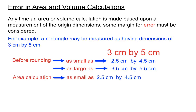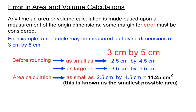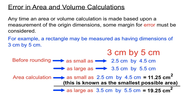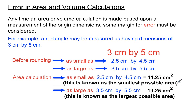So if we do an area calculation on those smallest and largest scenarios — the area of a rectangle is just length times breadth — we'd be doing 2.5 by 4.5, getting an area as small as 11.25 cm². We'd call that the smallest possible area. If we use the larger dimensions and calculate that way, we get 19.25 cm², and we'd call that the largest possible area.